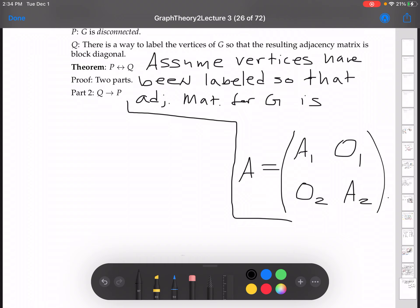So we've assumed that we can do this. We'll just assume the vertices have been labeled in this way, so the adjacency matrix for G is block diagonal.